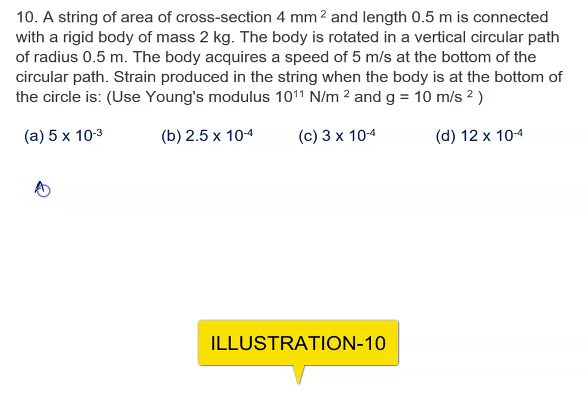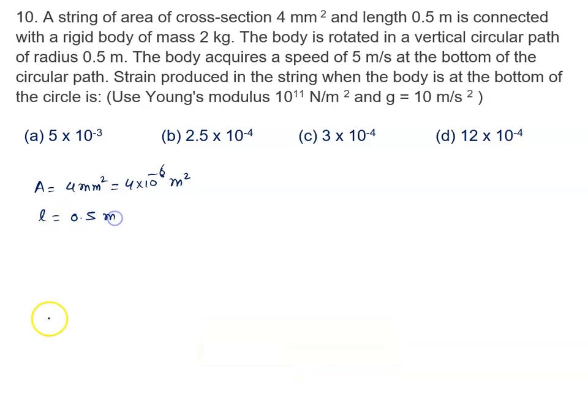A string of area of cross section 4 millimeter square, 4 millimeter square means 4 into 10 raised to the power minus 6 meter square and length 0.5 meter, is connected with a rigid body of mass 2 kilogram.